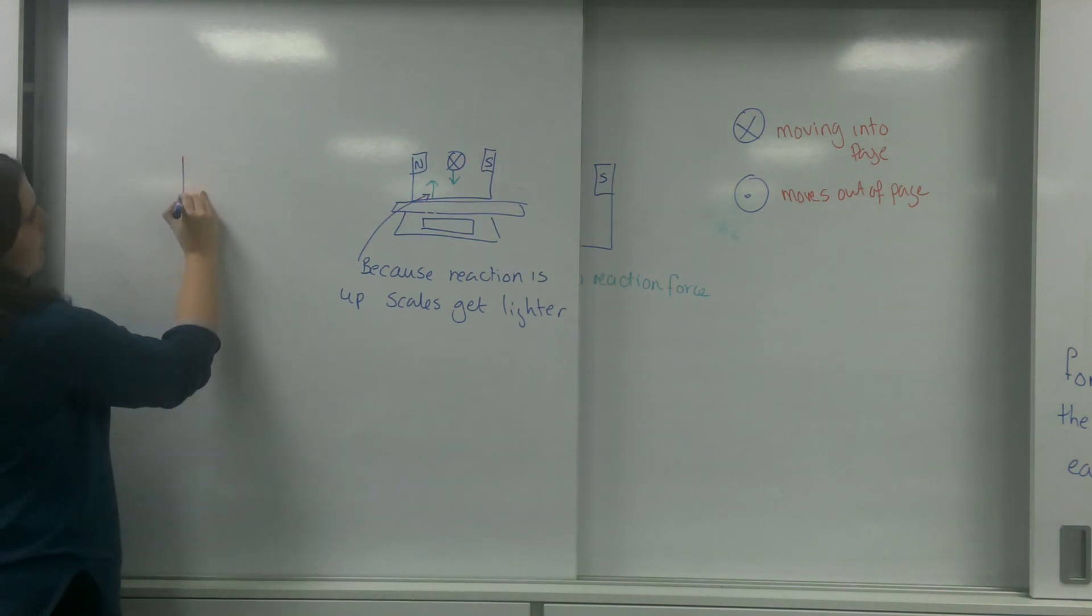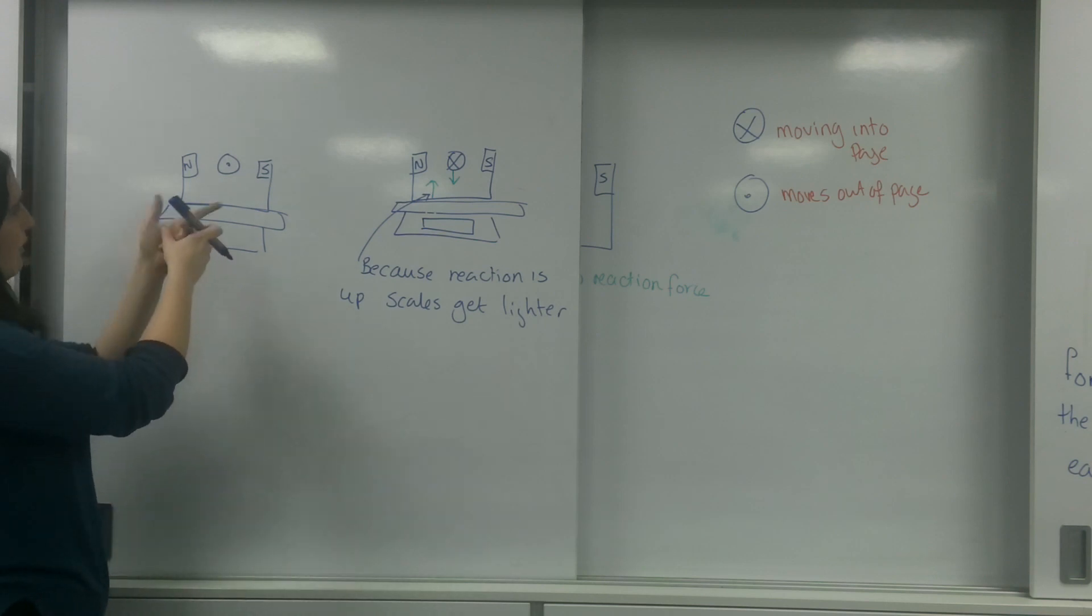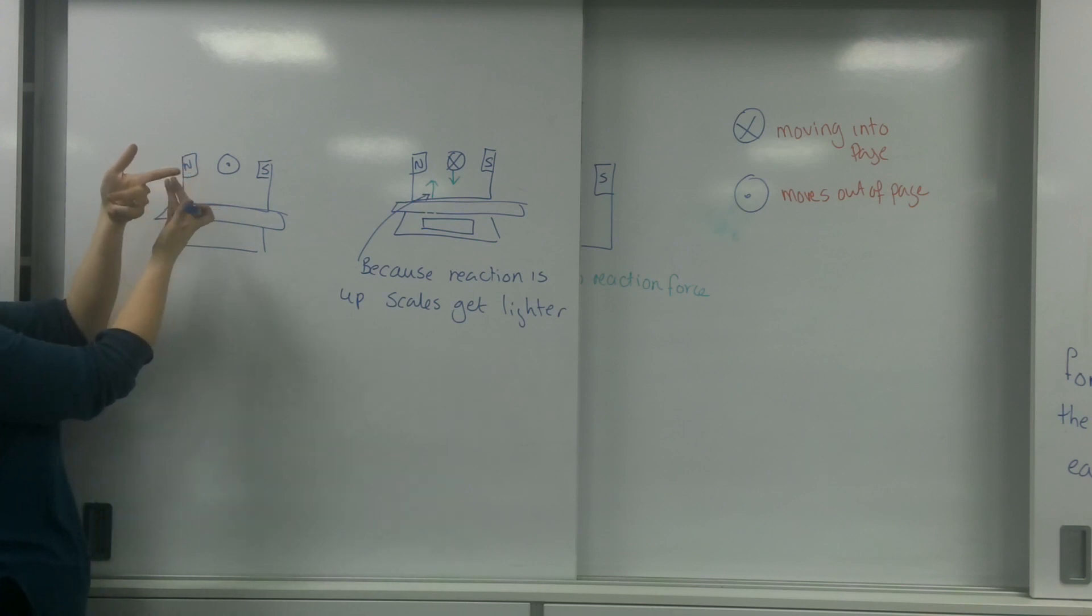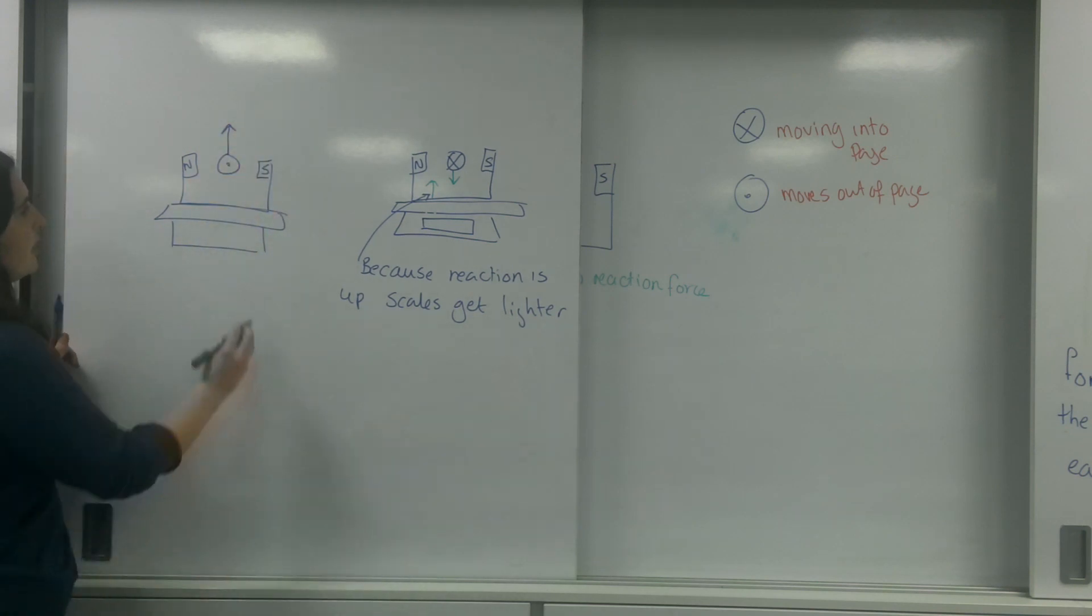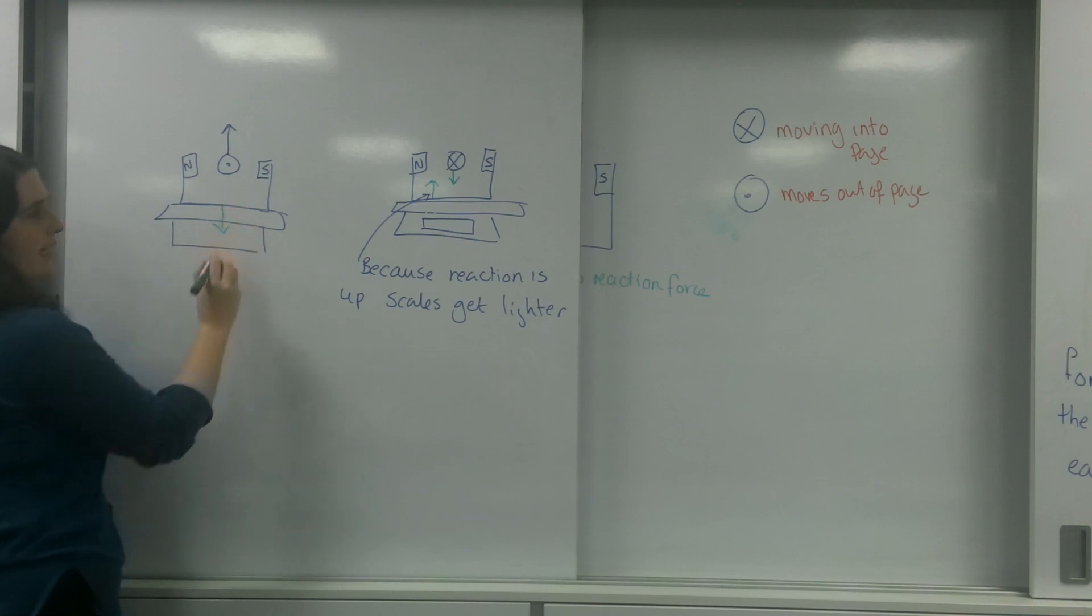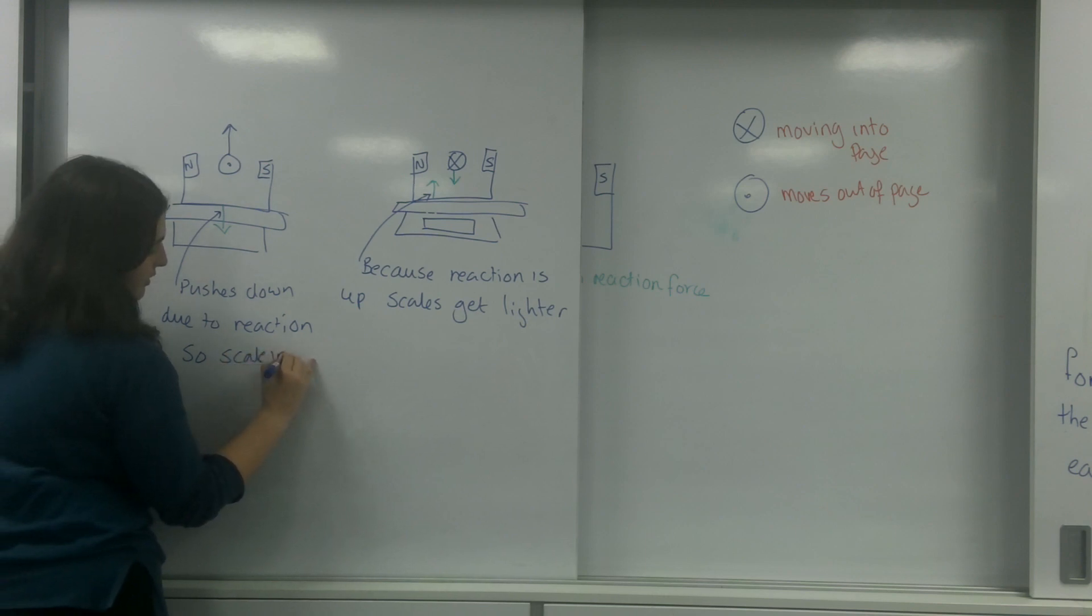If I flip it, so we're just going to flip the direction of the current. So my current is coming out. My finger here is pointing the right orientation, so north and south. So this object is going to push up on the field lines, which means that this object down here in reaction pushes down. So this pushes down due to reaction, so scale increases.